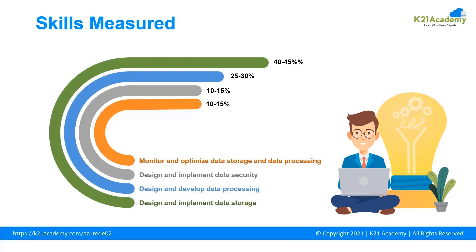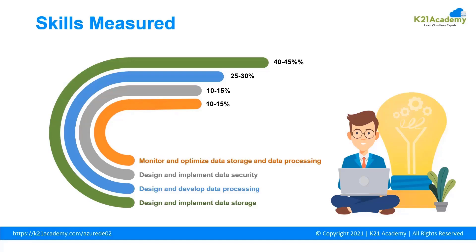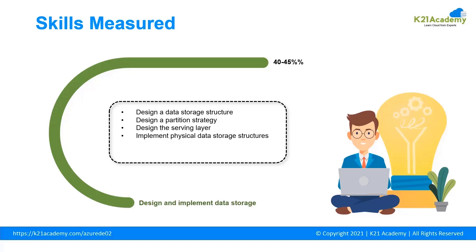Now let's look at the syllabus for the DP203 exam. There are four major sections. First, design and implement data storage, covering 40 to 45% of the exam. Second, design and develop data processing, covering 25 to 30%. Third, design and implement data security, covering 10 to 15%. Fourth, monitor and optimize data storage and data processing, covering the remaining 10 to 15%. Topics under design and implement data storage include: design a data storage structure, design a partition strategy, design the serving layer, implement a physical data storage structure, implement logical data structures, and implement the serving layer.